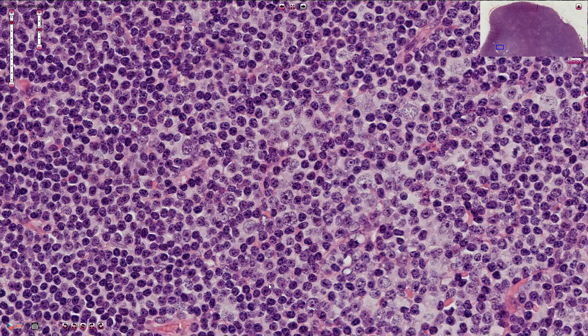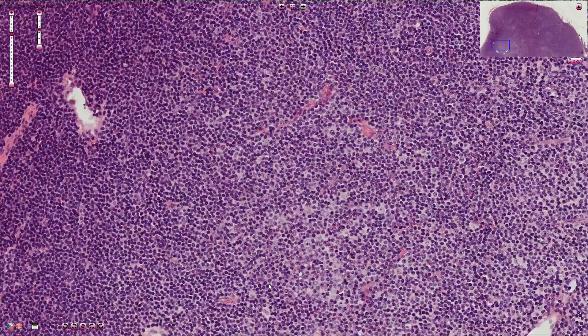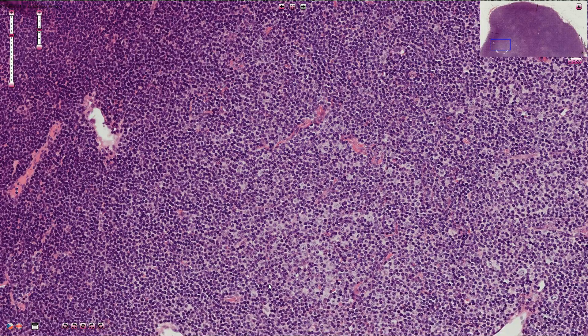So these nodules are called proliferation centers, and this is the classical appearance of chronic lymphocytic leukemia or small lymphocytic lymphoma, or simply CLL/SLL.